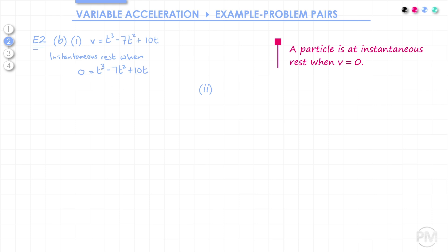We can then solve this equation by factorizing. First of all, every term has a common factor of t, so we can factorise that. Then we can factorise the quadratic to get t minus 5 and t minus 2. So v equals 0 when t equals 0, 5 or 2.